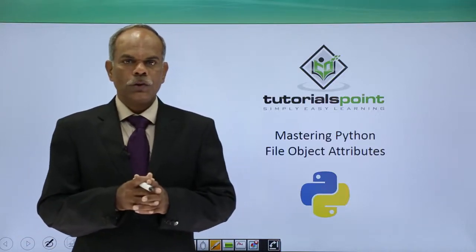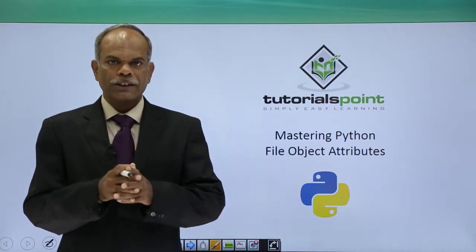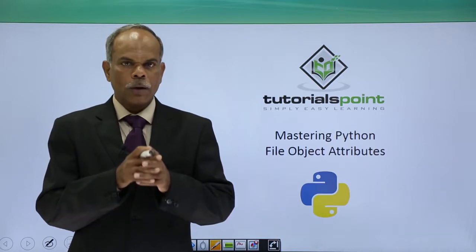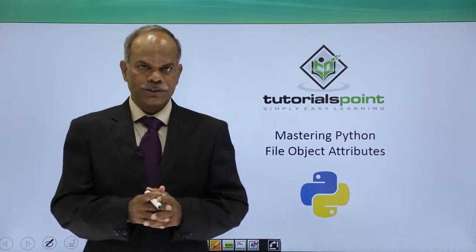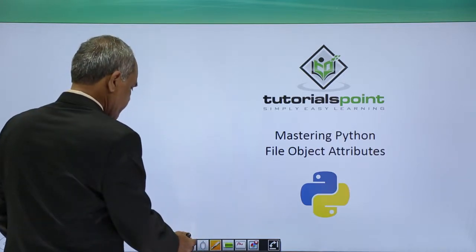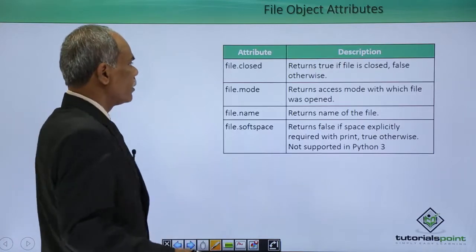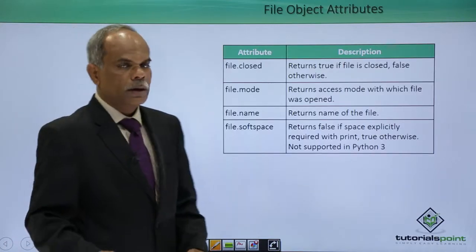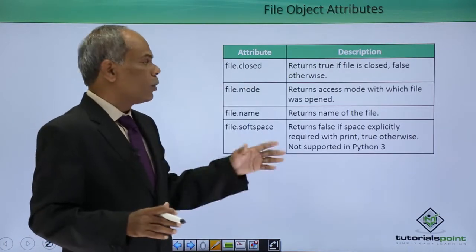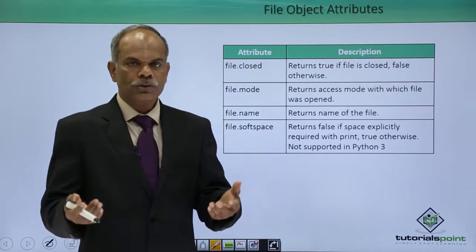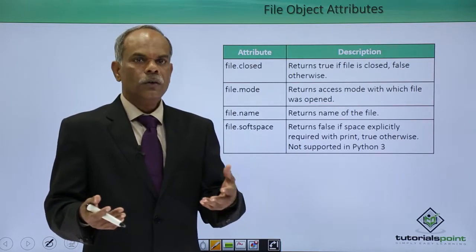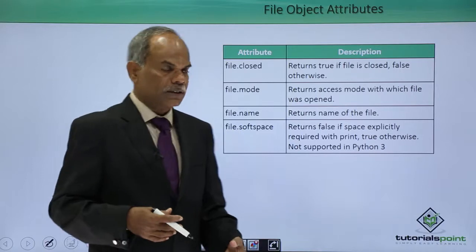Hello friends, in this video I will explain to you what are the file object attributes. The file object has these four important attributes which can be used and which are useful for doing certain further processing.